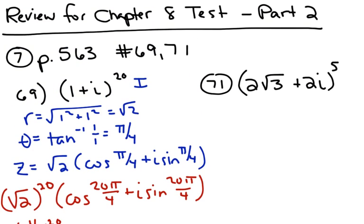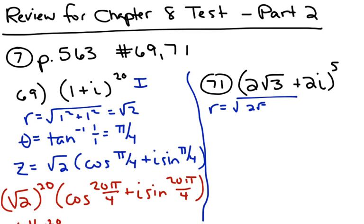Now let's do the other problem. r is going to be the square root of 2√3 squared plus 2 squared, which is 4 times 3 is 12, plus 4 is 16. The square root of 16 is 4.